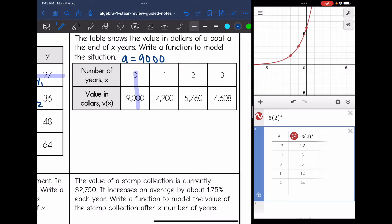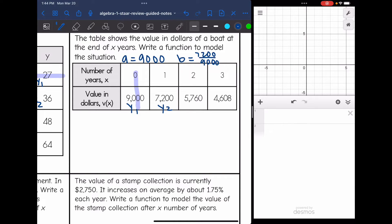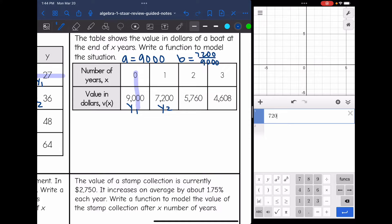And I need b, my growth or decay rate, which we can find by doing y2 divided by y1. So 7200 divided by 9000 will tell me my growth or decay rate. And I'm just going to have the calculator simplify this for me. And I get 0.8. So my equation for this situation would be y = 9000(0.8)^x.